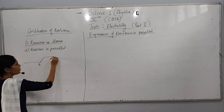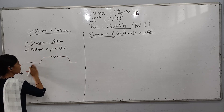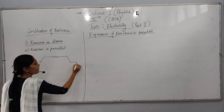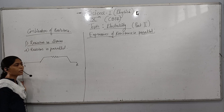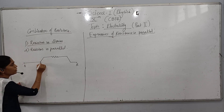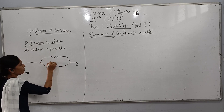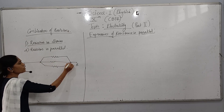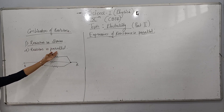Resistors are connected parallel to each other between any two points. Suppose these are two points A and B, and if between these two points we need to show resistors in parallel combination, it should be connected parallel like this. Such a combination is called resistors in parallel.